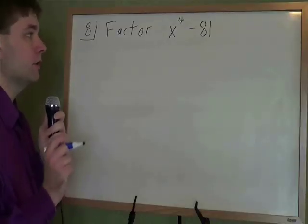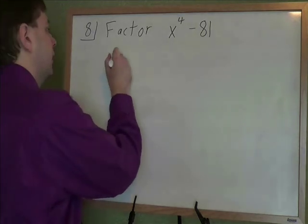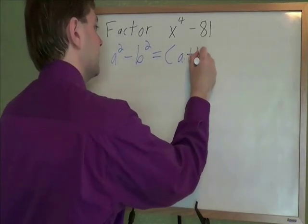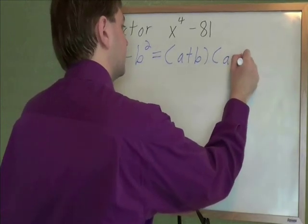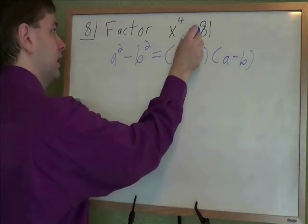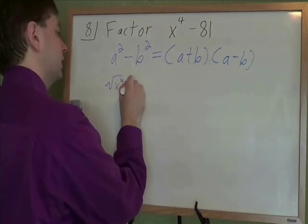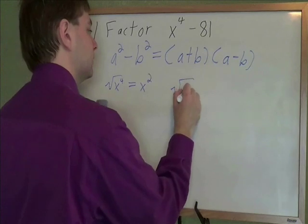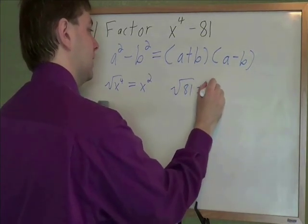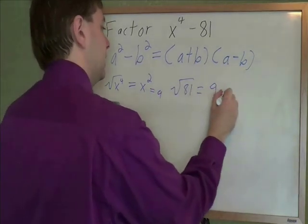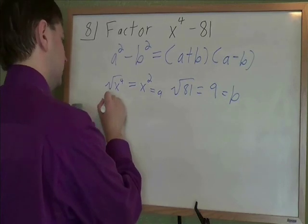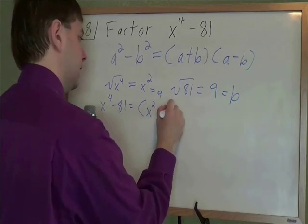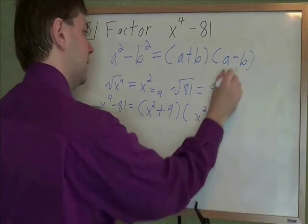Factor x to the fourth minus 81. For this problem, we need to remember the difference of squares formula. That formula goes like this. If you have something squared minus something else squared, that factors to be the original things added together times the original things subtracted. So the first step on this one is to take the square roots of these things. Square root of x to the fourth is going to be x to the second. Square root of 81 is going to be 9. So that's my a, and that's my b in this formula.